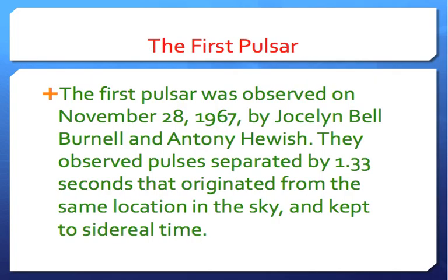The first pulsar was observed on November 28, 1967 by Jocelyn Bell Burnell and Anthony Hewish. They observed pulses separated by 1.33 seconds that originated from the same location in the sky and kept to sidereal time.